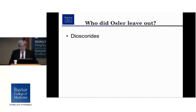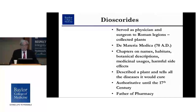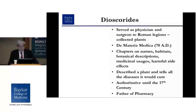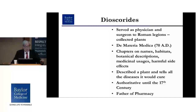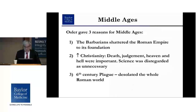One important individual Osler leaves out is Dioscorides, who lived around the same time as Galen and served as a physician and surgeon to the Roman legions, collecting plants from all parts of the world. He wrote the first real pharmacopoeia, called De Materia Medica, describing names, habitats, botanical descriptions, medicinal usage, and harmful side effects of all the plants. It was authoritative until the 17th century, and Dioscorides has come down to be thought of as the father of pharmacy.